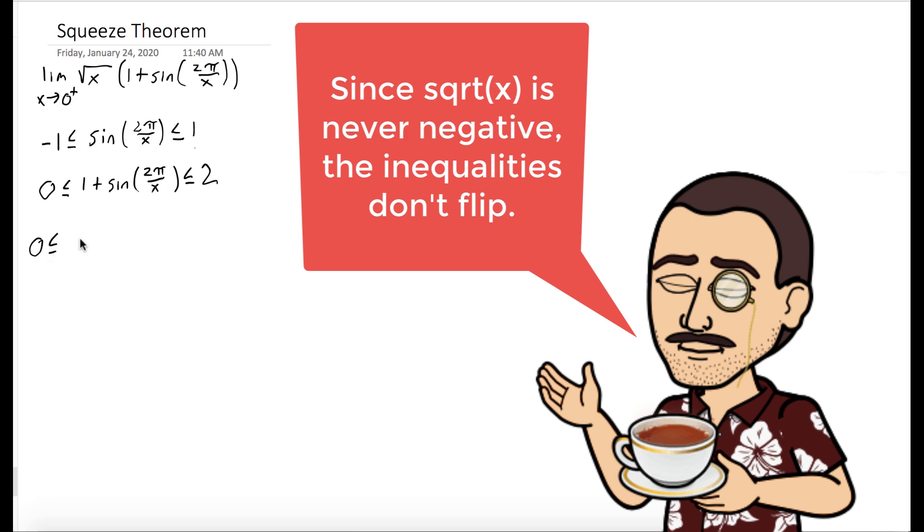Since the square root of x is always non-negative, we can multiply the square root of x to each term in this inequality. So we see that our function is bounded below by zero and bounded above by 2 square root of x.